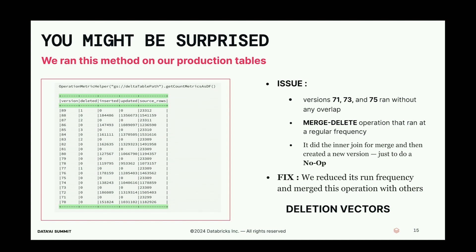We run this method regularly on our production Delta table and found something very interesting. Looking at versions 71, 73, and 75, we could see they ran without any overlap — no delete, insert, or update actually happened, yet the join ran and created new versions. When we checked the code, there was a merge-delete operation running at regular frequency. When we originally set it up, there were a lot of deletes; the deletes dried up over time and we didn't realize it. The fix was to reduce its run frequency and merge this operation with other upserts. The takeaway: if you run this method on your production Delta table, you will find very interesting underlying patterns.